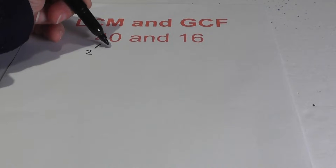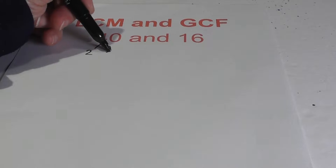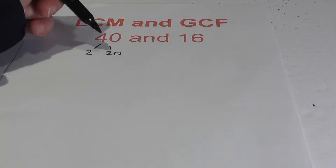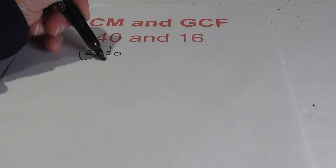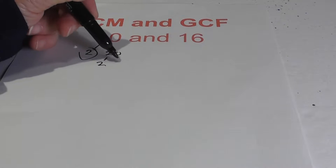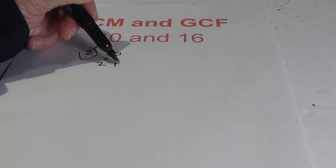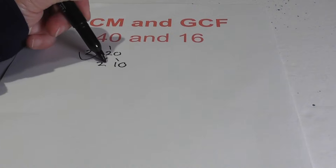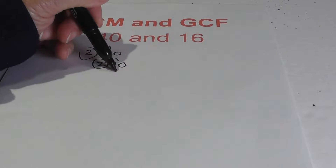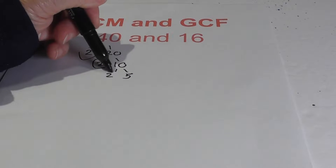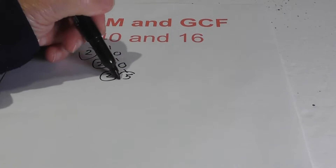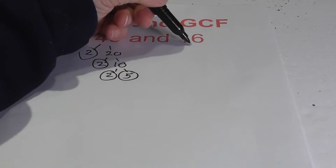We have 2 times 20. Circle the 2 because it is prime. Now 2 times 10 equals 20, and then 2 times 5. Both of these are prime.